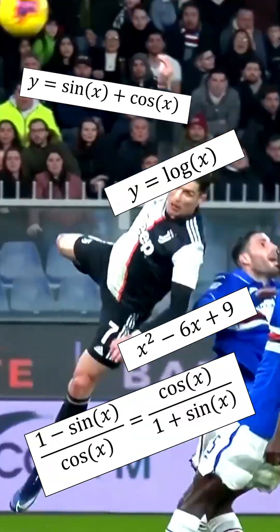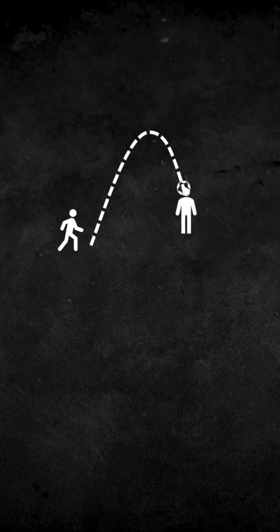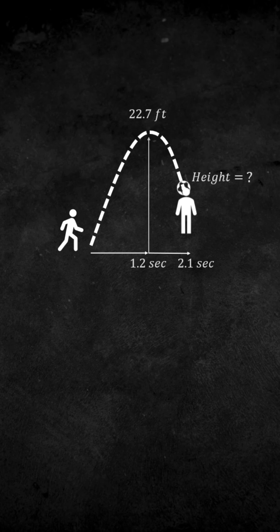Let's take a look at how plays like this can be modeled using math. Well, if we start with the player crossing the ball and we want to find how high they jumped, and we know that after 1.2 seconds the ball reached a maximum height of 22.7 feet, and after 2.1 seconds the player headed the ball,